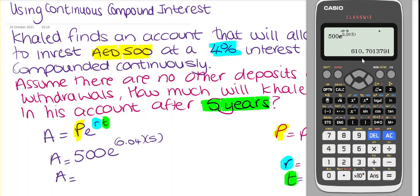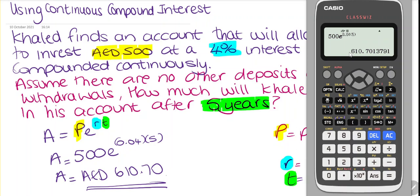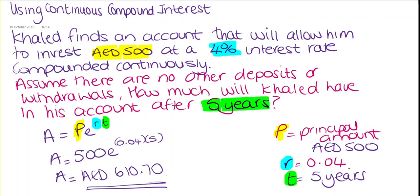The result is 610.70. So our answer is 610 dirhams, 70 fils. After five years compounded continuously, Khaled will have 610 dirhams and 70 fils in his account.